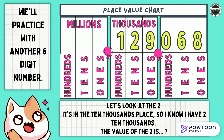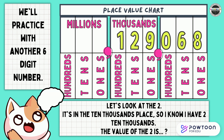We'll practice with another 6-digit number. Let's look at the 2 — it's in the ten thousands place, so I know I have 2 tens thousands. The value of the 2 is? Think, then respond. That's right — 20,000 or 2 tens thousands.